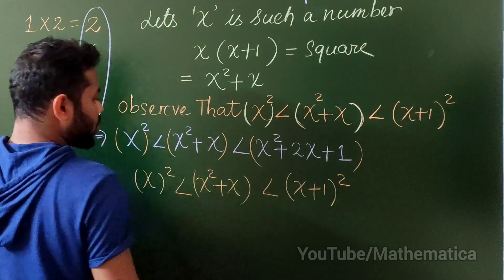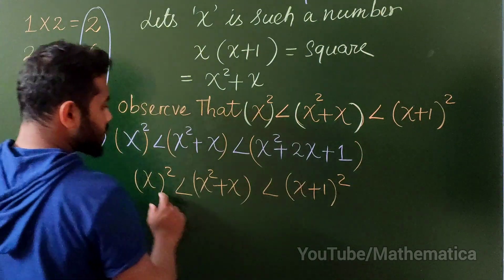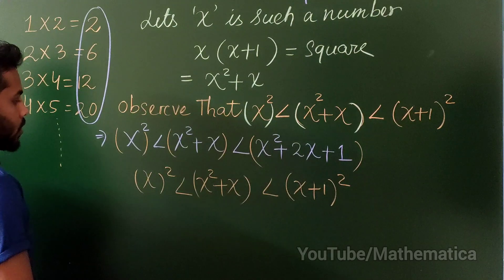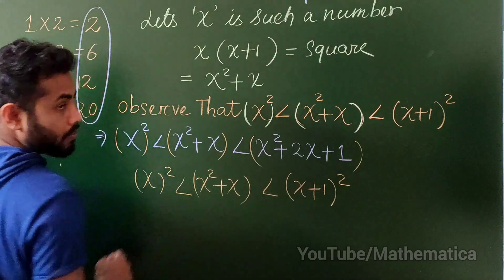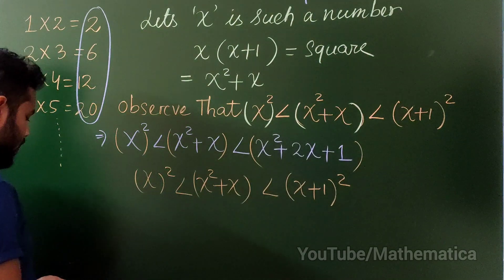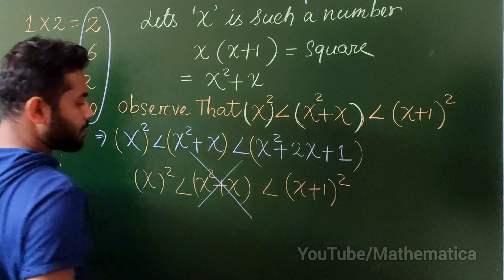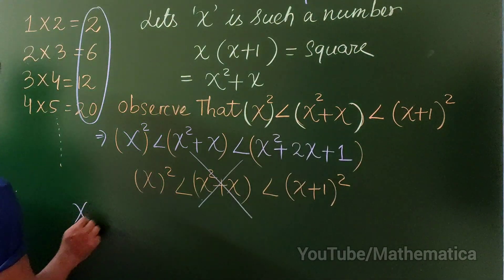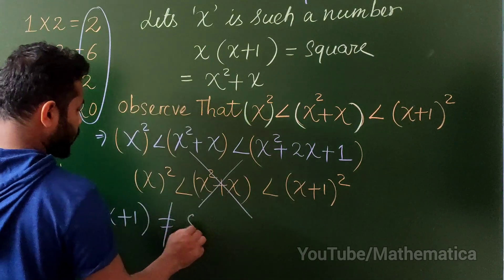And because we are working on positive whole numbers clearly this one x and x plus 1 both are consecutive numbers. So there cannot be any number in between them. So it means this quantity is impossible to be a square. Therefore x into x plus 1 cannot be a square for any number.